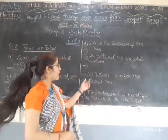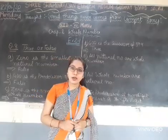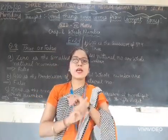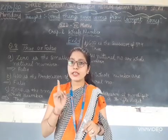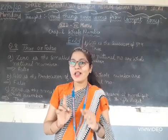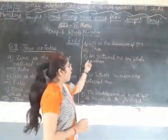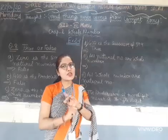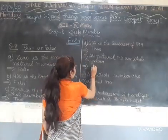All natural numbers are whole numbers — yes, this is true. All natural numbers are whole numbers. But all whole numbers are not natural numbers, because whole numbers include 0 and natural numbers start from 1. Natural numbers do not include 0. So all natural numbers are whole numbers, but all whole numbers are not natural numbers. This statement is true.